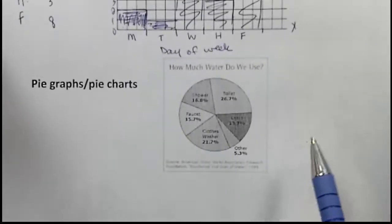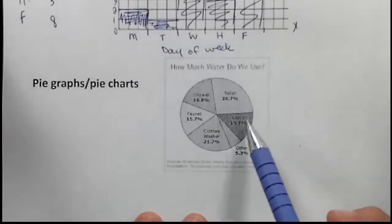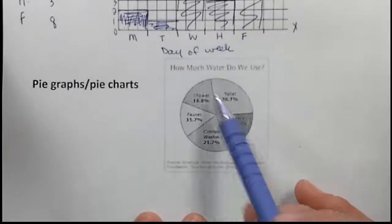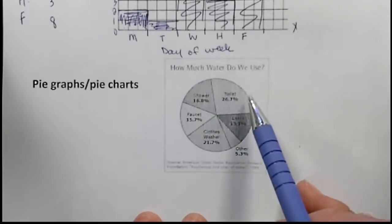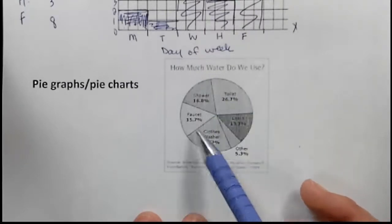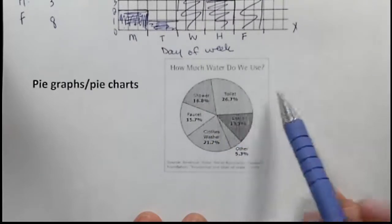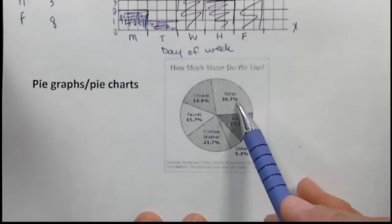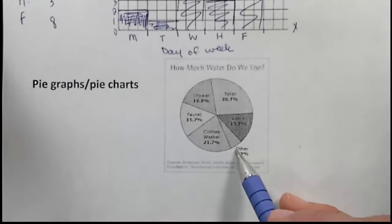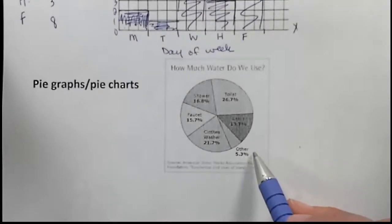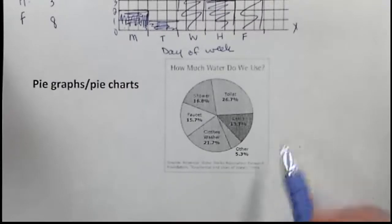Lastly, pie charts. I'm not going to make you create them, but you should be able to interpret them. It's usually pretty simple. This one says how much water do we use, so when you're interpreting it, you first want to look at the title and then see what each section of the pie represents. It will usually give you a percentage, so toilets use 26.7% of the water. Obviously, the most water use is coming from toilets. The least amount is coming from other sources, and sometimes in your graphs and things it will explain what other technically means.